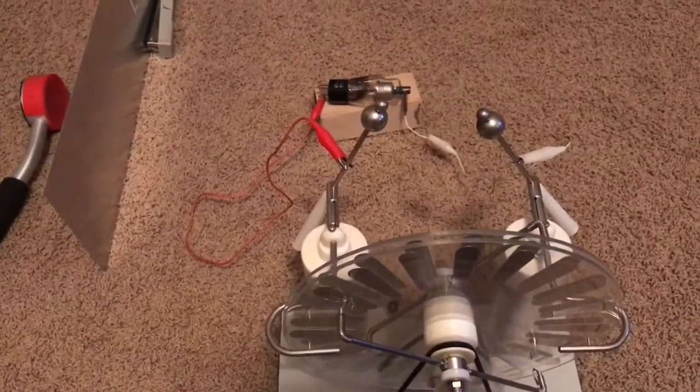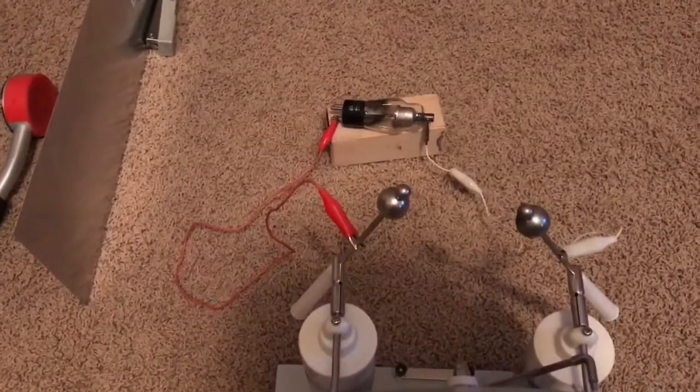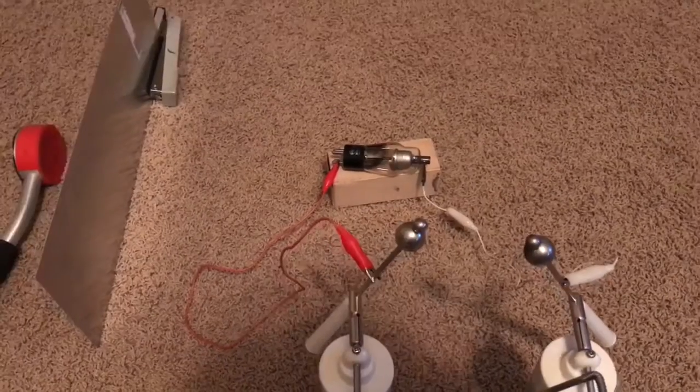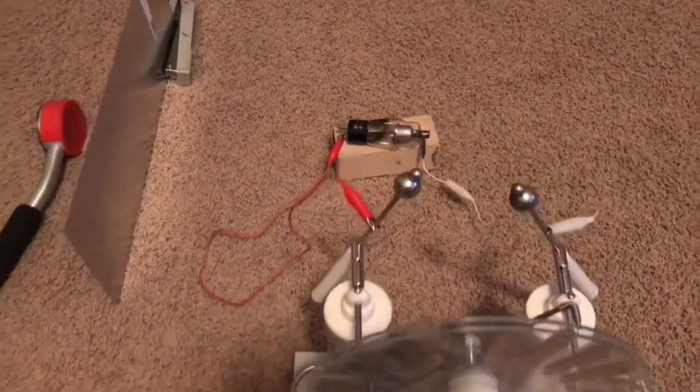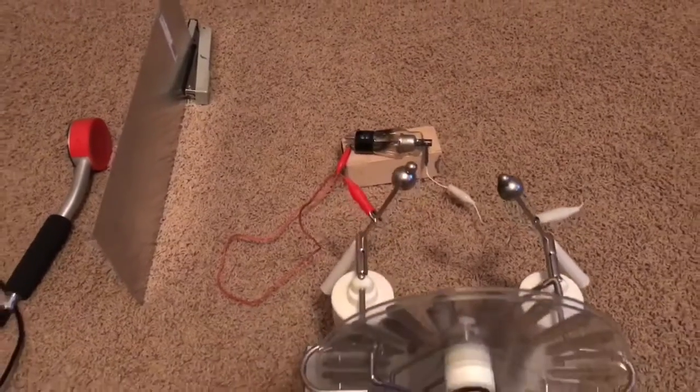In this video I'm going to use a Wimshurst machine which is connected to that vacuum tube. That's actually a rectifier tube. The cap at the top is the anode and the bottom pins go to the cathode.